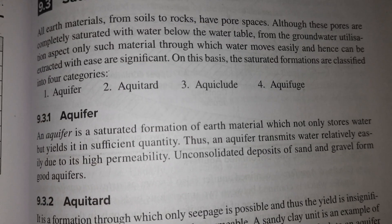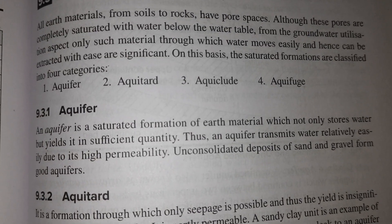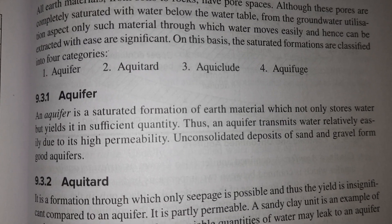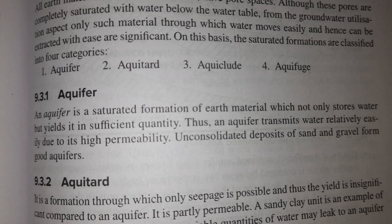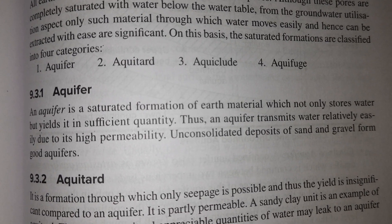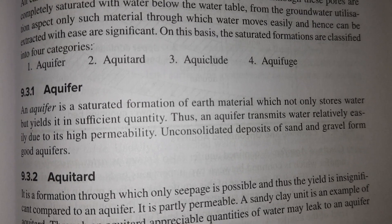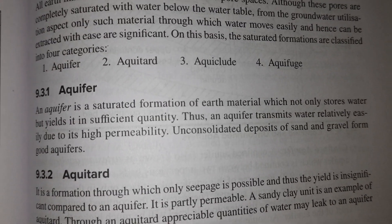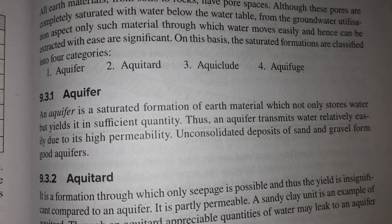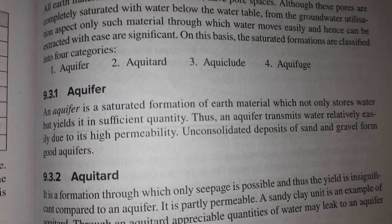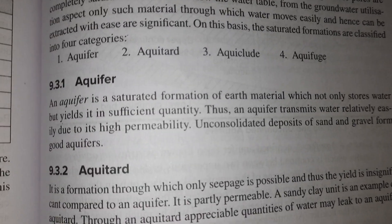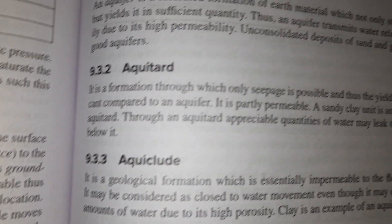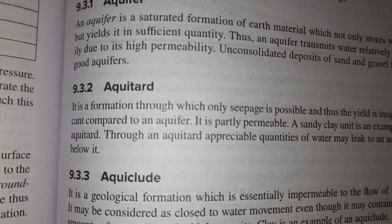Let's study about different types of groundwater underground water storage. First, we have the aquifer. An aquifer is the kind of storage system which allows water to pass through it easily and it obviously stores water.